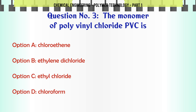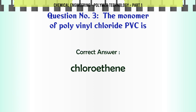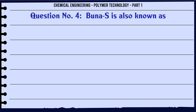The monomer of polyvinyl chloride (PVC) is: A. Chloroethene, B. Ethylene dichloride, C. Ethyl chloride, D. Chloroform. The correct answer is Chloroethene.